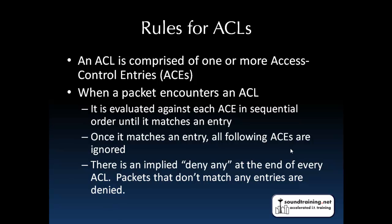Here are the rules for ACLs. An ACL is comprised of one or more access control entries — these are one line in an access list. When a packet encounters an ACL, it's evaluated against each access control entry in sequential order until it matches an entry. Anything that comes after a match is not even evaluated. Once it matches an entry, all following ACEs are ignored, and there's an implied deny any at the end of every ACL. Packets that don't match any entries are denied.